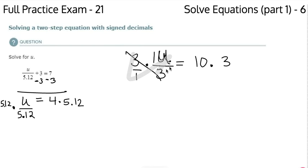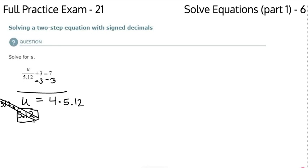So I can multiply both sides by this denominator and those eliminate on the left, and on the right I get 5.12 times 4. I have two digits behind the decimal in my problem, so I get two digits in my answer: 20.48.